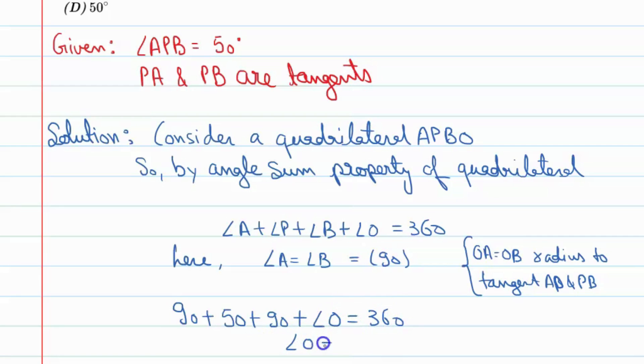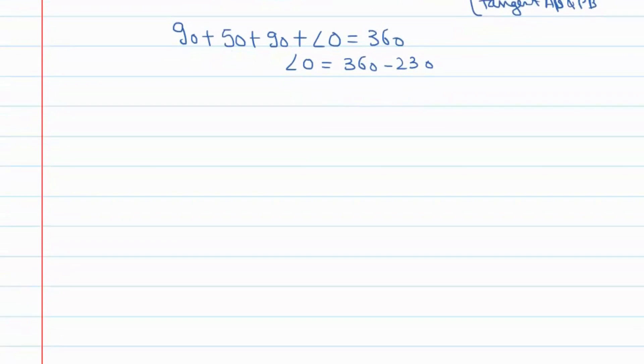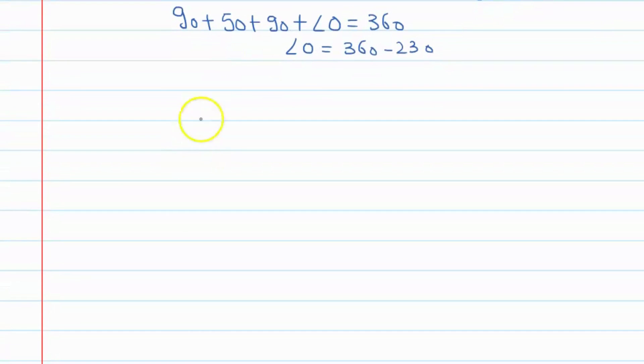Alright. Here you can say angle O is equal to 360 minus 230. You can sum three on the left hand side. So here you can say angle O is equal to 130. This value is.